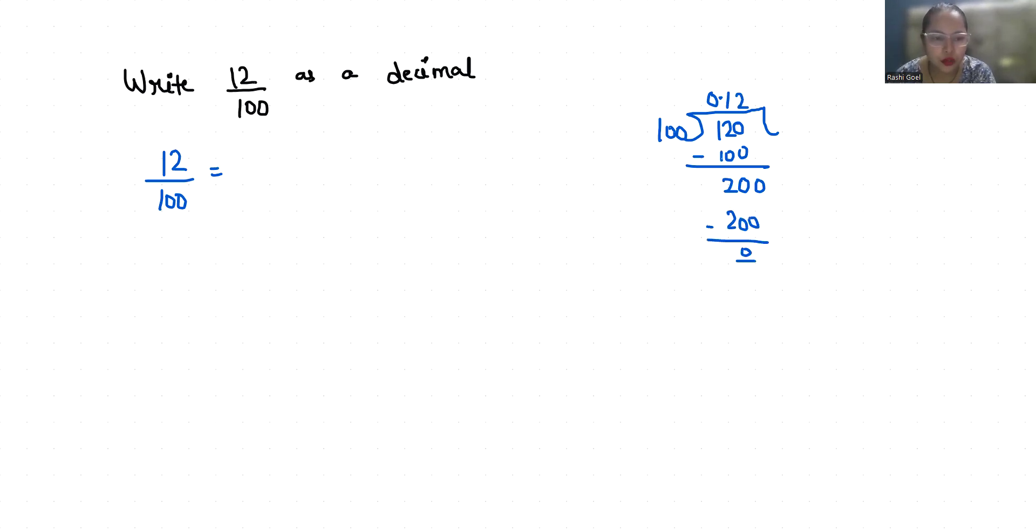So our first method is you can simply divide the numerator with the denominator to convert fraction into decimal. That is 0.12. Method 2 is...